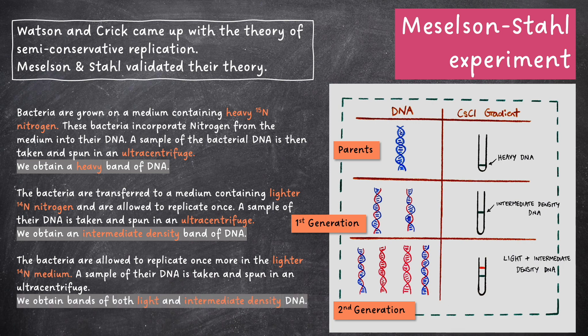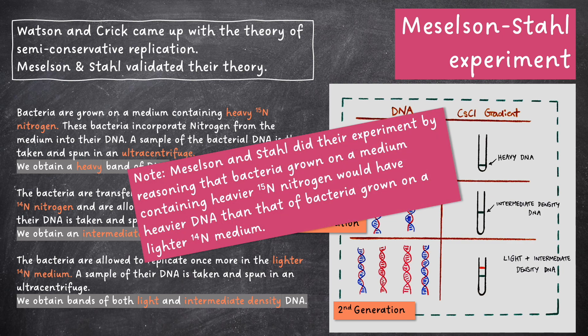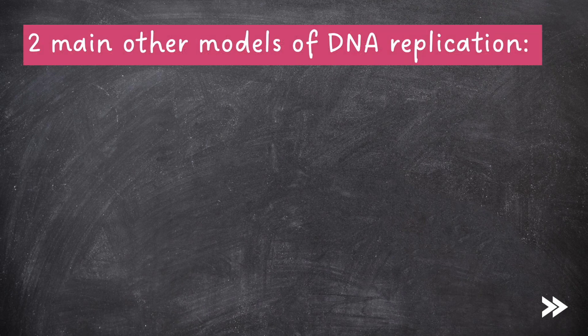Note that Meselson and Stahl did their experiment by reasoning that bacteria grown on a medium containing heavier 15N nitrogen would have heavier DNA than that of bacteria grown on lighter 14N medium. In addition to semi-conservative replication, there are two main other models of DNA replication which were proposed: conservative and dispersive.